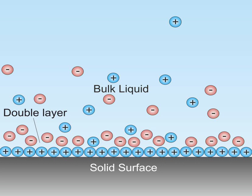consists of ions adsorbed onto the object due to chemical interactions. The second layer is composed of ions attracted to the surface charge via the Coulomb force, electrically screening the first layer. This second layer is loosely associated with the object. It is made of free ions that move in the fluid under the influence of electric attraction and thermal motion rather than being firmly anchored. It is thus called the diffuse layer.